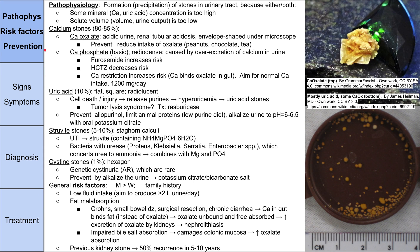Let's start with pathophysiology, risk factors, and prevention. The formation of stones is essentially the precipitation of stones in the urinary tract, because of one or both of these things: first, the mineral — which is calcium, uric acid, or other minerals — can be in too high a concentration. This is the solute being too high.